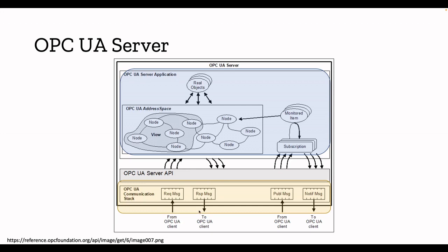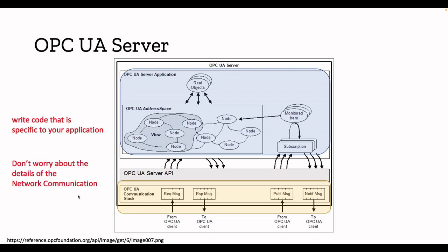The OPC UA server API isolates the server application and the OPC UA communication stack. The main reason for this isolation is that as a developer creating solutions using OPC UA server, you can just focus on your business logic and write code specific to your application — you don't need to worry much about the details of the network communication. Just focus on creating objects, defining variables and properties. That is the main reason the communication stack and the server application are isolated.